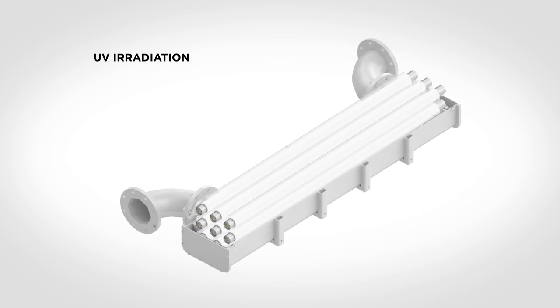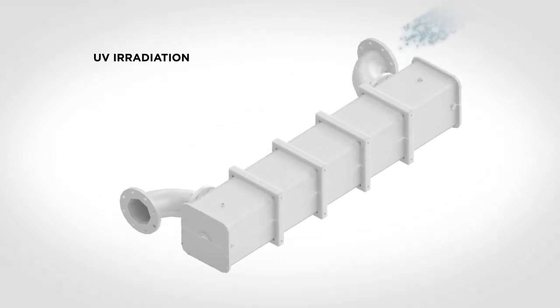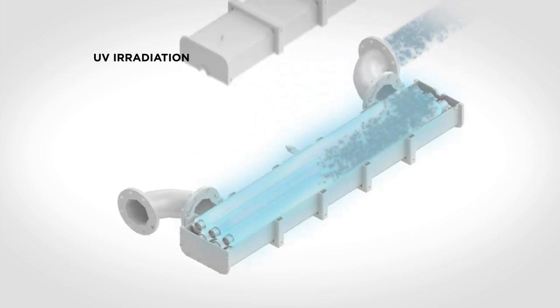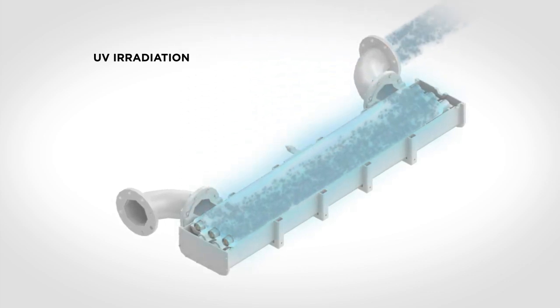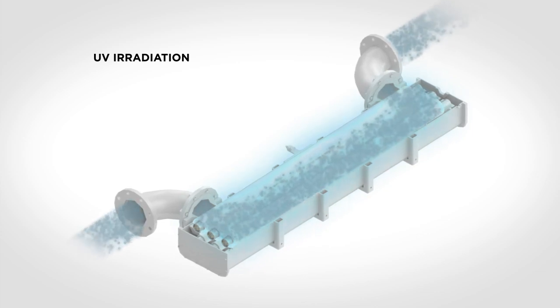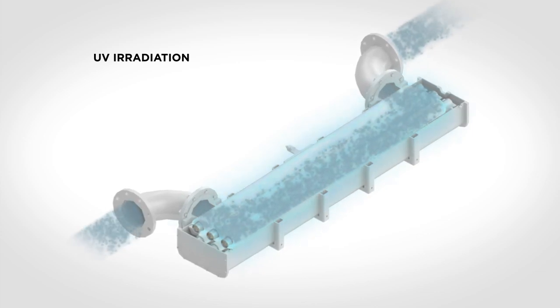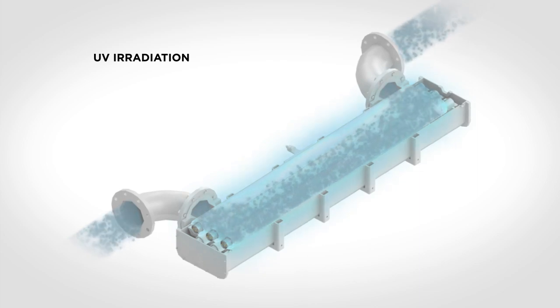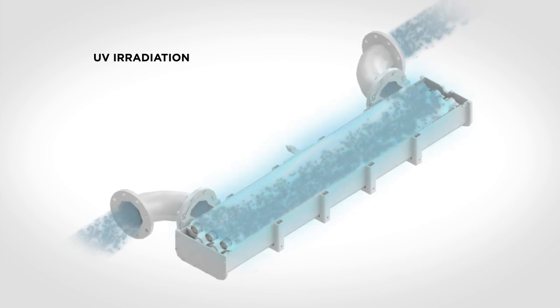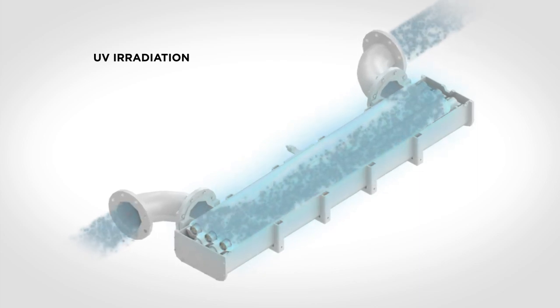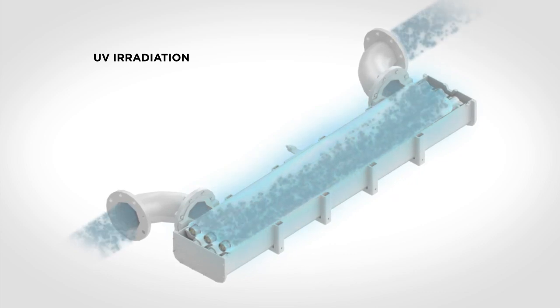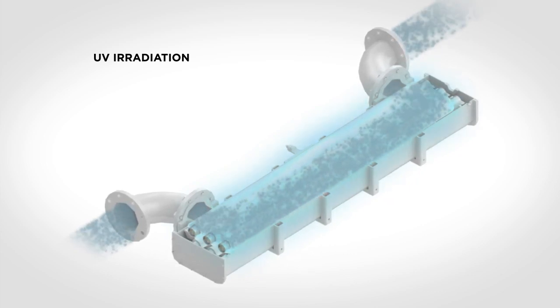Each UV reactor consists of 9 UV lamps and a housing. This allows each UV reactor to treat 100 cubic meters per hour in salt and brackish water conditions and 75 cubic meters per hour in fresh water. The DESMI Ocean Guard system monitors the salinity of the water and automatically adjusts the flow through each reactor accordingly.